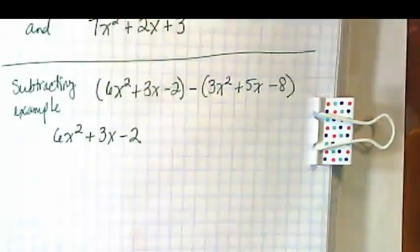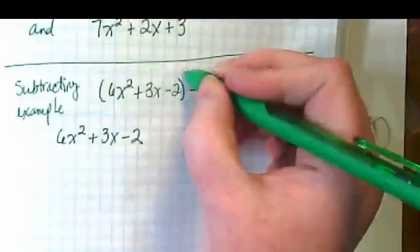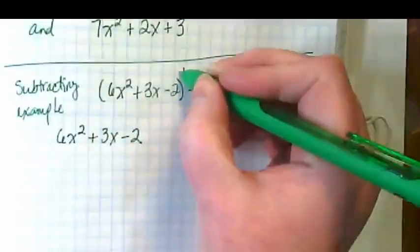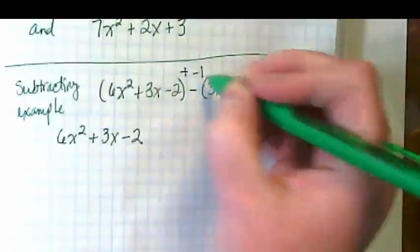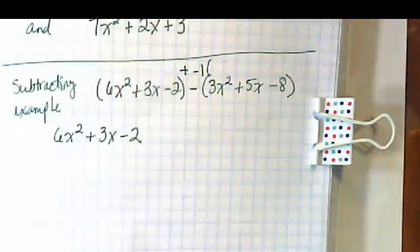It means a negative one. There's two invisible things right here. What's really here is plus negative one and then the parentheses.